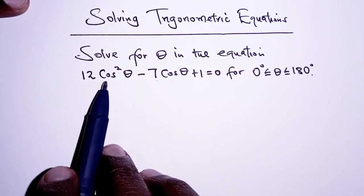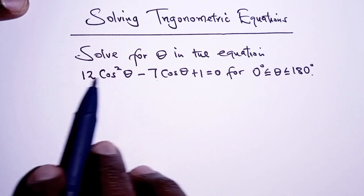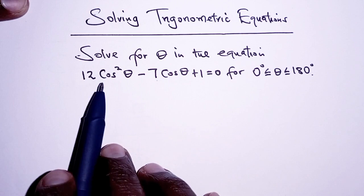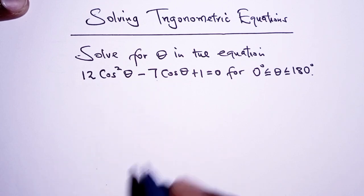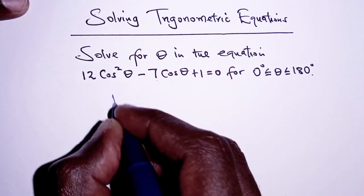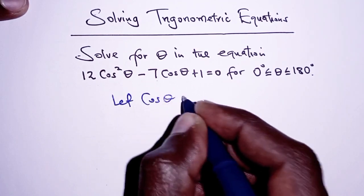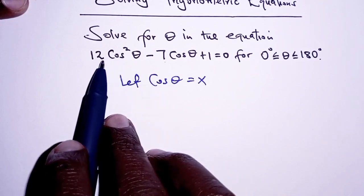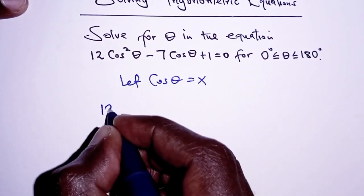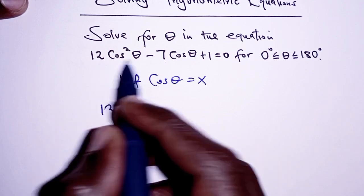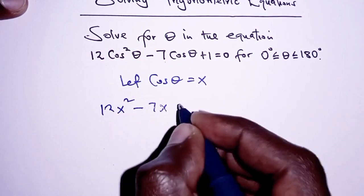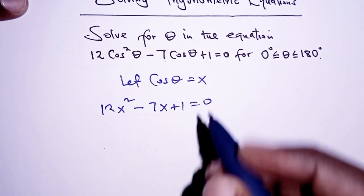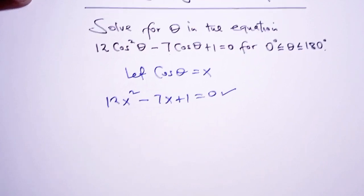We can see we have cosine squared of theta in the first term and cosine of theta in the second term, so we can let cosine of theta be some unknown. For example, let cosine of theta be x. Therefore, substituting into this equation we'll have 12x squared minus 7x plus 1 is equal to 0.